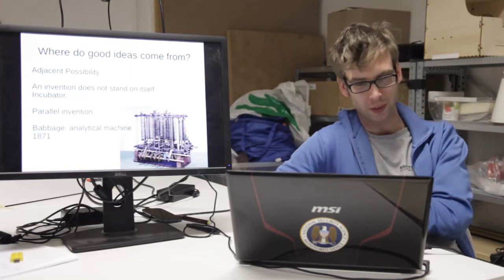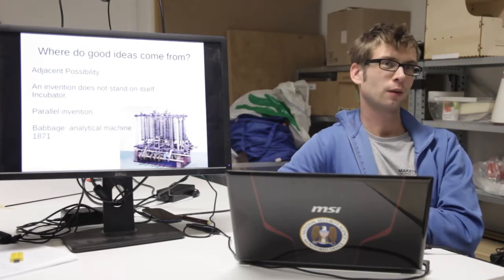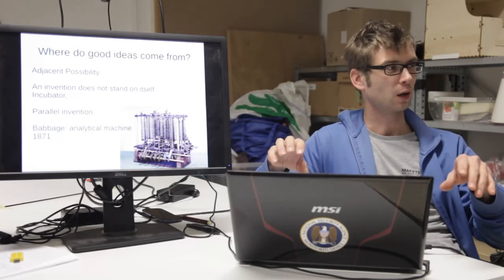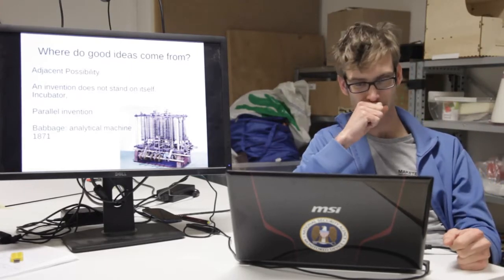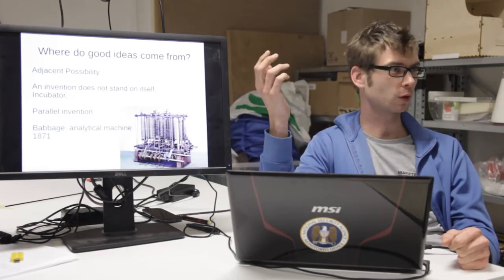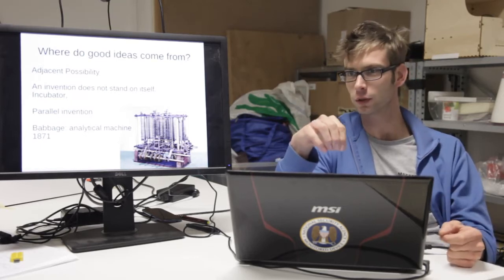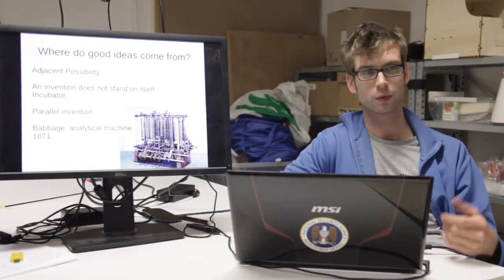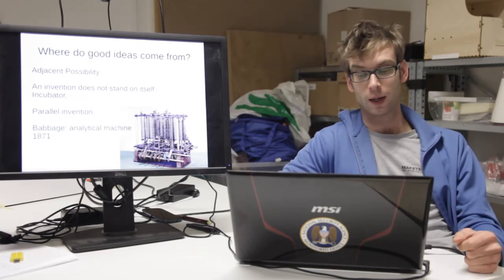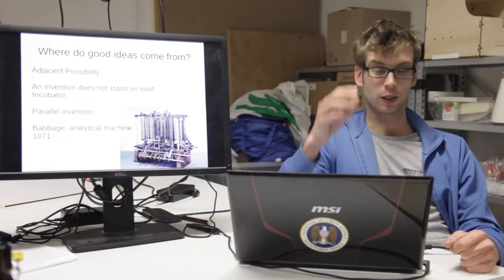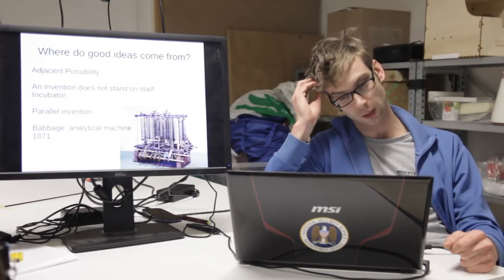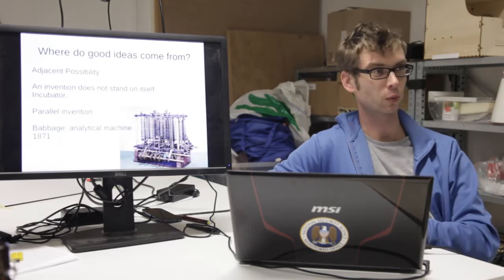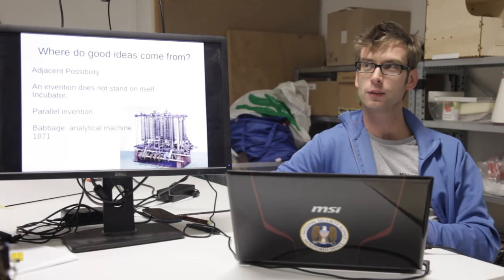To start with the adjacent possibility. It's the truth that an invention never stands on itself. They always come from different parts and they also meet other inventions around them. For example, the light bulb could not have come into existence without electricity distribution. So that's also why Edison basically invented both at the same time. He worked on the two things together. One is a light bulb without electricity.